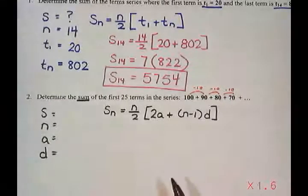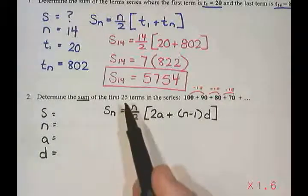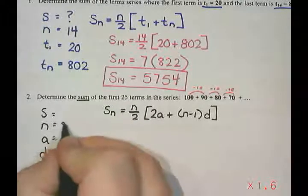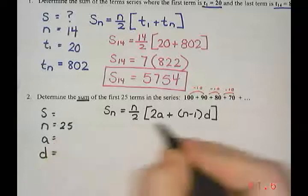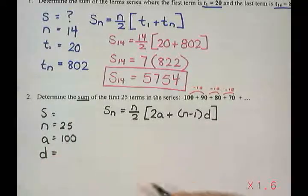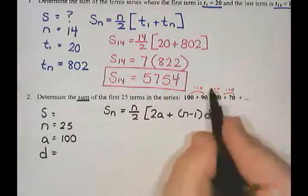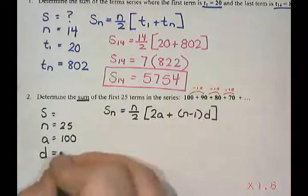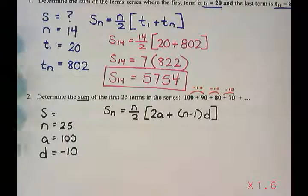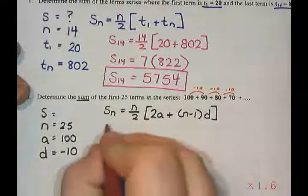So it does not tell me what the sum is, but it does tell me that there are 25 terms. So my n should be 25. I know that the first term is 100. That's always the easy part to pick out. And my d, my common difference, is negative 10 because we are subtracting 10 each time.